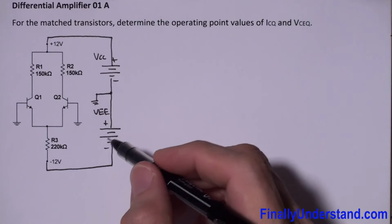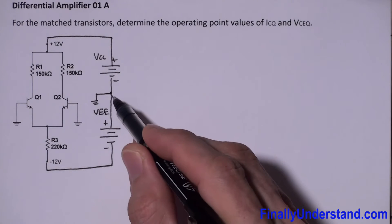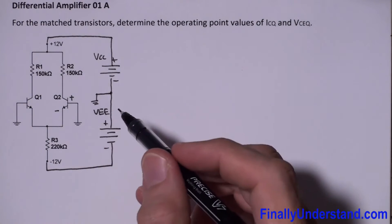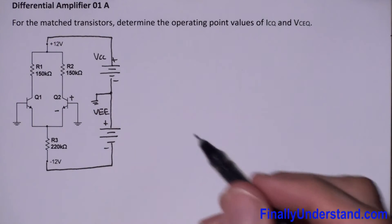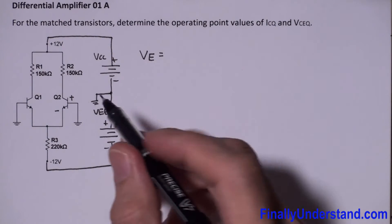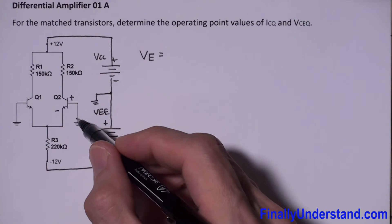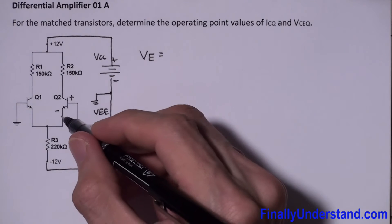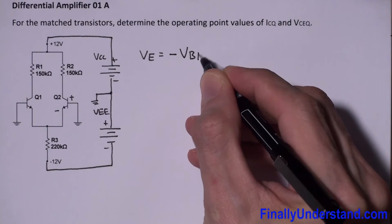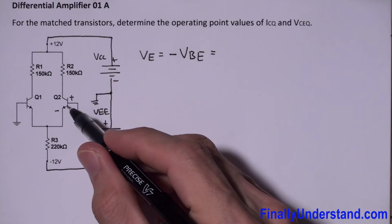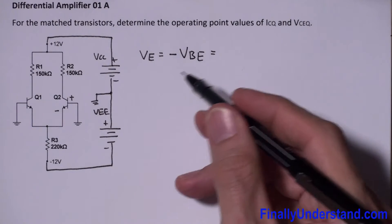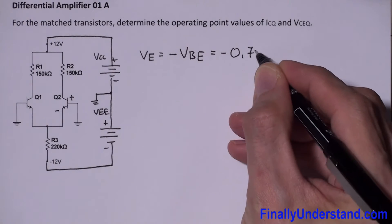The current is going to go from VEE through the ground, from the ground to the base, and then to the emitter — that's why I'm going to have a negative sign here. I have to find the voltage VE first. VE is the voltage between the emitter and the ground. Using KVL, VE is simply equal to negative VBE. Since VBE is approximately 0.7 volts, VE equals negative 0.7 volts.